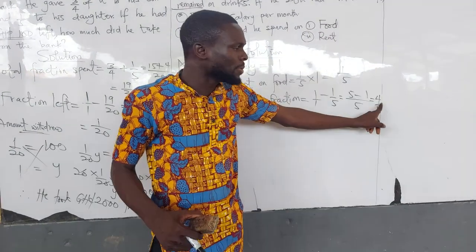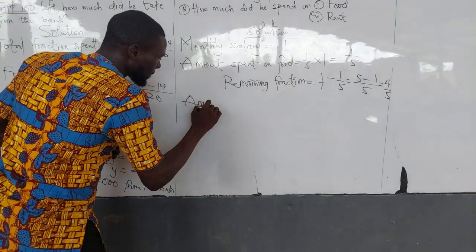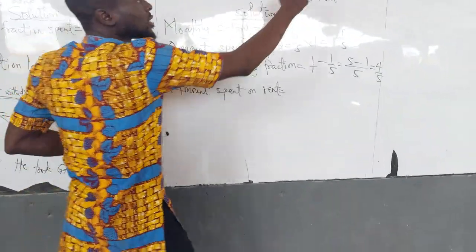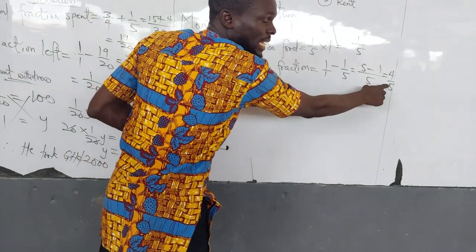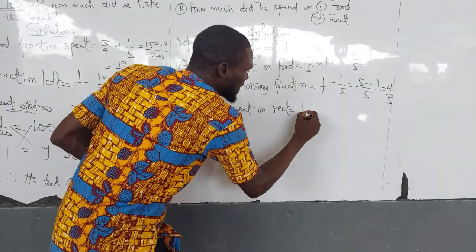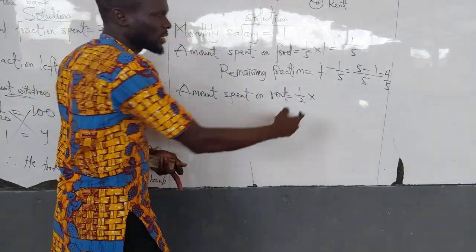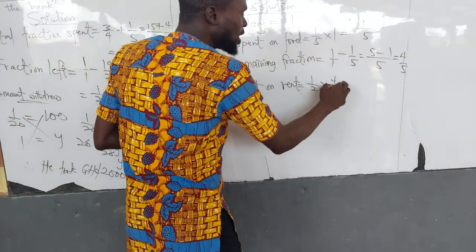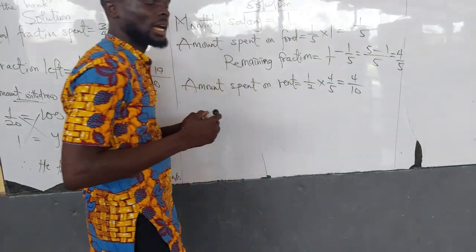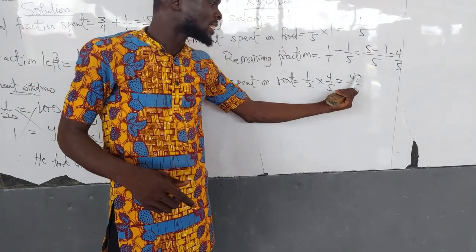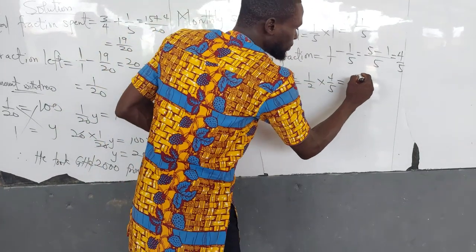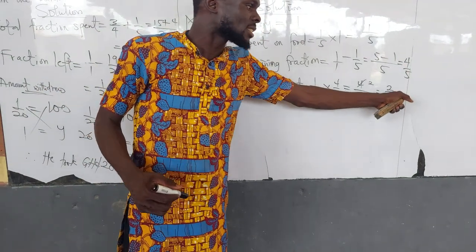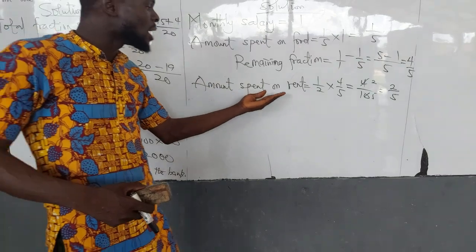They said he spent half of the remaining on rent. So the amount spent on rent is one half of the remaining fraction, four over five. Since 'of' means multiplication, we do not find LCM — multiply numerator by numerator and denominator by denominator: one times four is four, two times five is ten, giving four over ten. We can simplify: four over ten reduces to two over five. So the amount spent on rent is two over five.